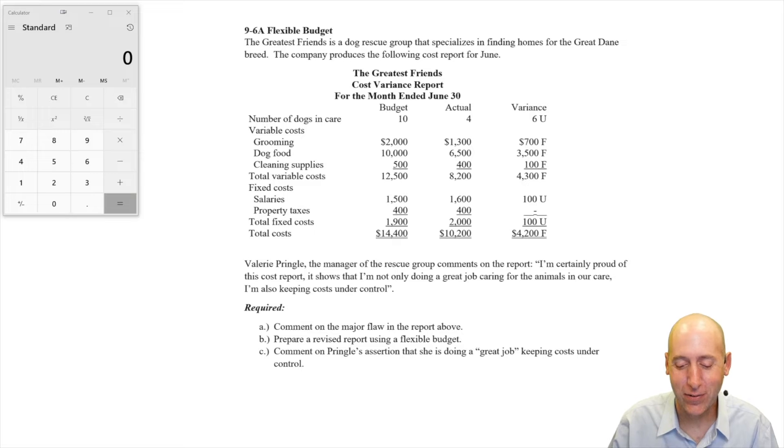Comment on the major flaw of the report above? Well, the big flaw is when we made our budget, we thought we were going to have 10 dogs. We only had four. It doesn't really get at the cost control element, because of course, if you have four dogs, your cost should be lower.